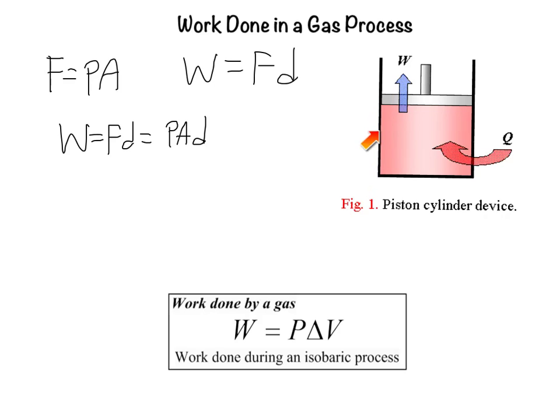This distance is a vertical distance. It's the height of that cylinder. So we recognize immediately that this area times the height of the cylinder is a change in volume. So putting that in here, we get pressure times the change in volume. So we now found that for an isobaric process, the work that's done is equal to the pressure multiplied by the change in volume, which we see represented right here.